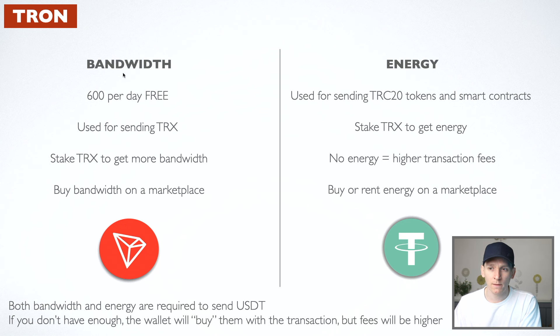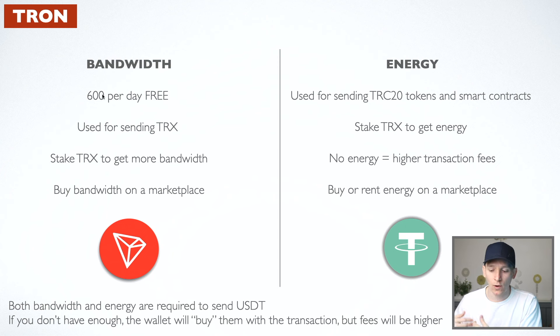Bandwidth is something that you use to send around TRX, which is the layer one coin. If you have a wallet, you automatically get 600 bandwidth per day for free — so you have some gas fees given to you for free every day just for having a wallet.